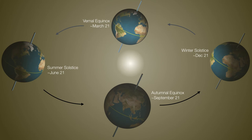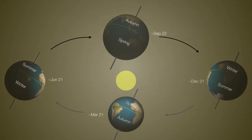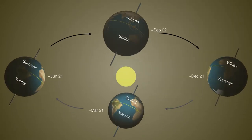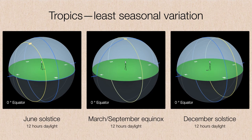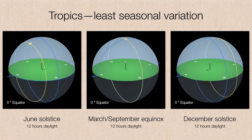Whatever season we're experiencing in the northern hemisphere, the southern hemisphere is necessarily experiencing the reverse season. The amount of seasonal variation varies as a result of latitude. At the tropics — using the equator as the midpoint — the sun is above the horizon for exactly 12 hours every day of the year. The sun is always going to be high in the sky at some point during the day; it's highest on the equinox but never really sets very low even on the solstices. So the tropics don't experience much seasonal temperature variation.